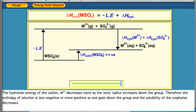Therefore, the enthalpy of solution is less negative or more positive as one goes down the group, and the solubility of the sulfates decreases.